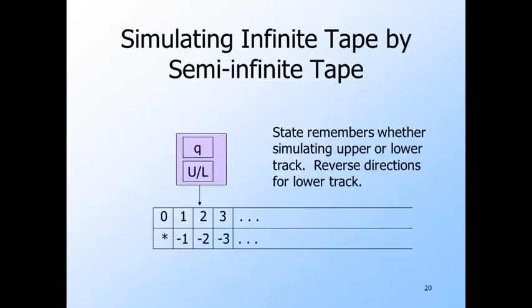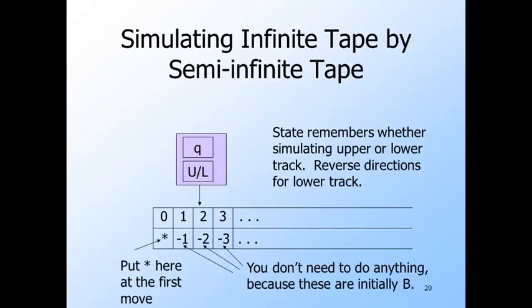Here's a picture of the new Turing machine. Its state holds the state of the original Turing machine plus a bit — u or l — that tells it whether to look at the upper or lower track to simulate a move of the original. When that bit is u, the new machine moves its head in the same direction as the original; if the bit is l, it moves in the opposite direction. At the first move, the marker star is placed on the lower track. There is no need to modify the input symbols, since the negative positions initially hold blank, and we can treat input symbols as having a second blank component.